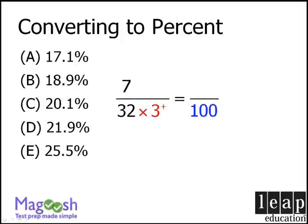Now, if we multiply our denominator by a number slightly larger than 3, we must also multiply our numerator by a number slightly larger than 3. When we do this, we get a number slightly larger than 21, which is equal to a number slightly larger than 21%.